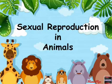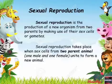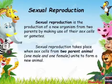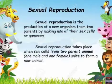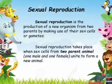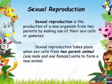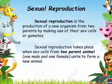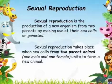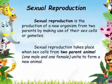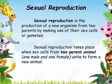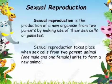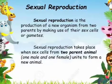Sexual reproduction in animals. Sexual reproduction is the production of a new organism from two parents by making use of their sex cells or gametes.